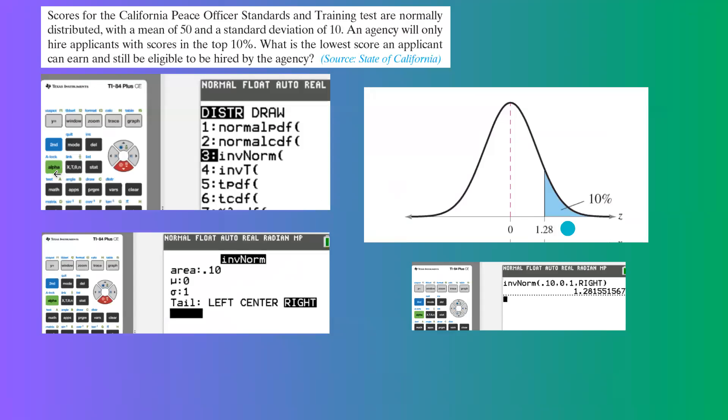Let us use our calculator. You're going to go to second vars and find inverse norm. In your inverse norm, the area to the right is 10%, so 0.10. Mean for z-score is 0, standard deviation is 1, and the area is located on the right-hand side. When you do the calculation, it gives you 1.28, which is your z-value or z-score.